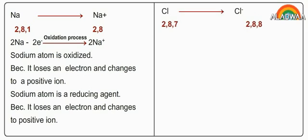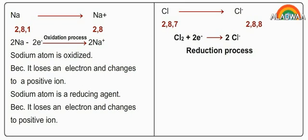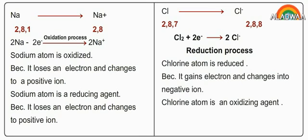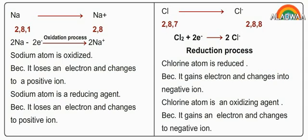Cl electronic configuration is 2,8,7. Chlorine gains one electron during the chemical reaction and changes into Cl negative ion. Cl2 plus 2e⁻ produces 2Cl⁻ ion. Reduction process: chlorine atom is reduced because it gains an electron and changes into a negative ion. Chlorine atom is an oxidizing agent because it gains electrons and changes to a negative ion.